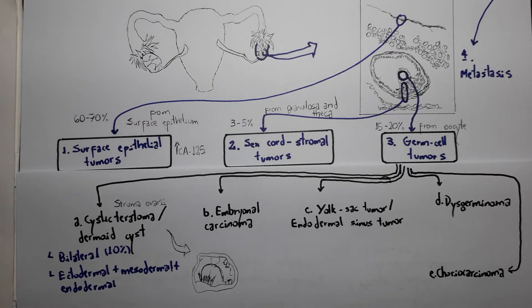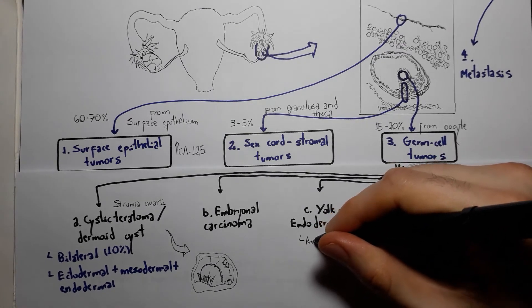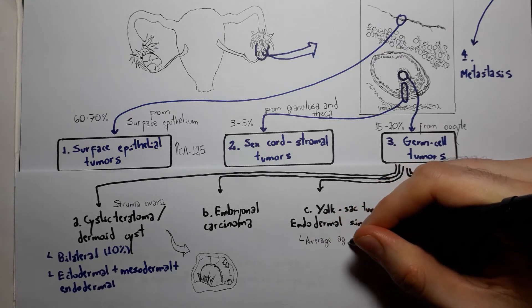The embryonal carcinoma is aggressive with early metastases. The yolk sac tumor, or endodermal sinus tumor, is most known for its occurrence in children.